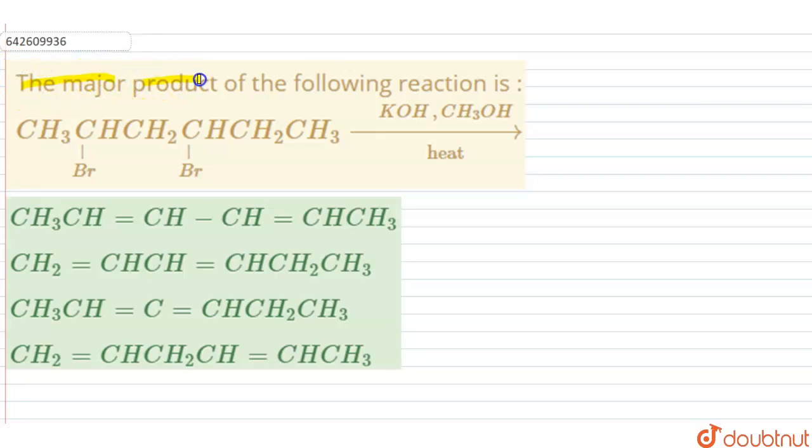The major product of the following reaction is: we have a dibromo alkane here, and the reagents which have been given is KOH in presence of methanol and heating. Let us analyze the reaction.